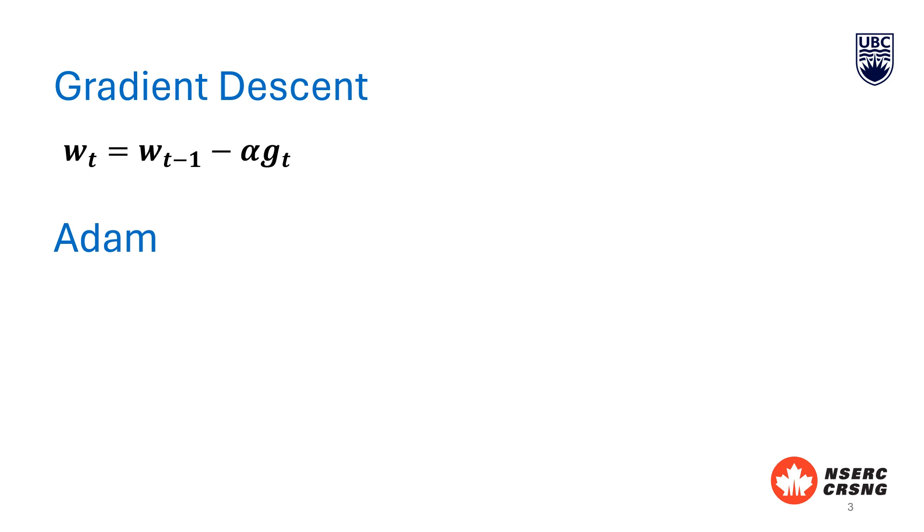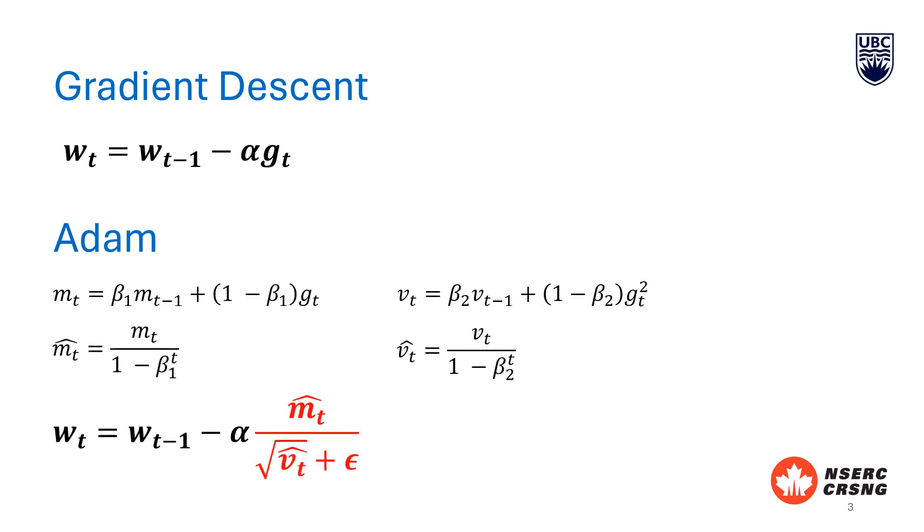Next, let's talk about Adam, which stands for Adaptive Moment Estimation. It combines the benefits of both momentum and RMSprop, making it more efficient and effective than standard gradient descent. Here mt presents the first moment estimate, which is the running average of the past gradients. It accelerates the optimization process.